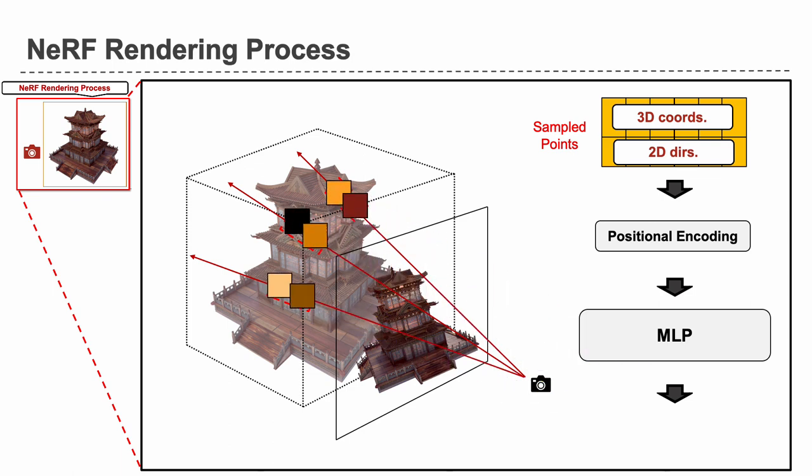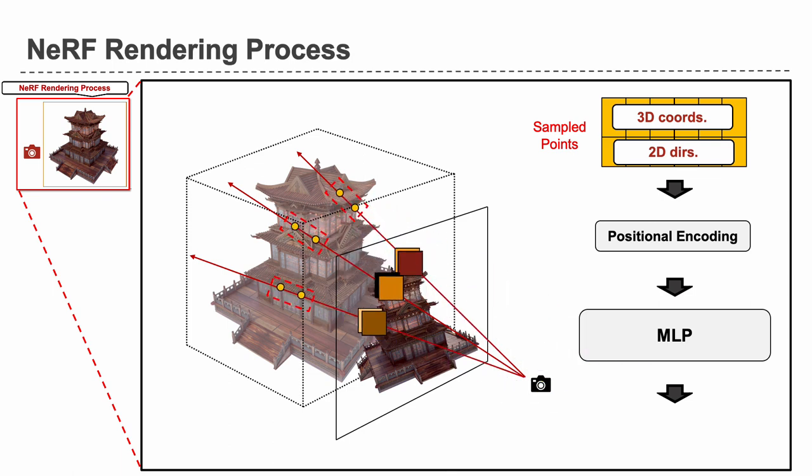Finally, the colors of the sampled points are accumulated to produce the RGB value of each pixel.